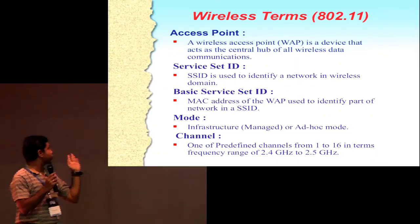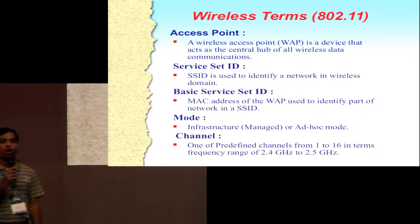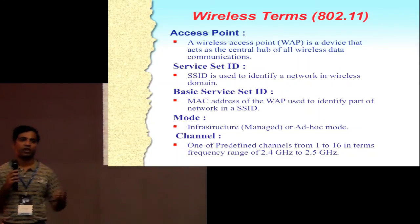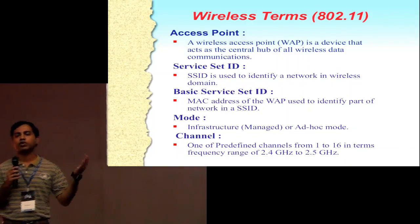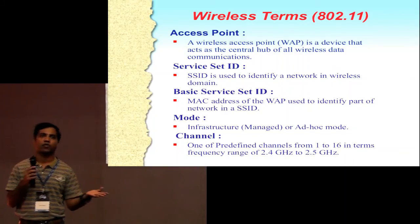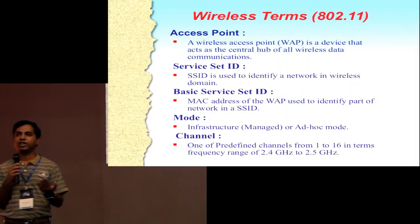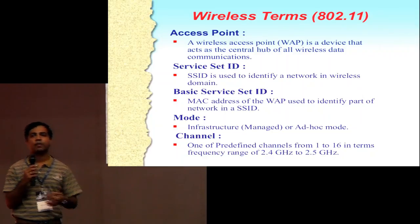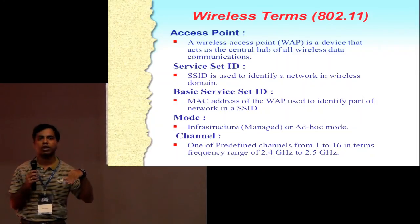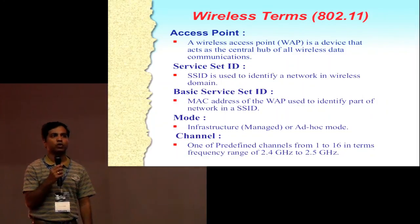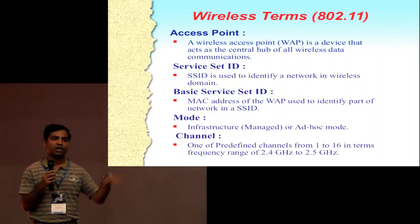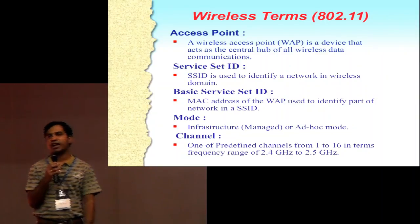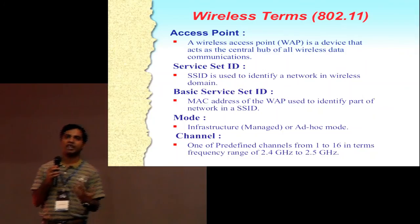An access point is basically the central hub of all wireless data communication. SSID is the name you see when you scan — it's the name of the network that is available. SSID is also related to knowing the MAC address of the device. Mode refers to infrastructure mode or ad hoc mode — everybody uses infrastructure mode for reliable communications.